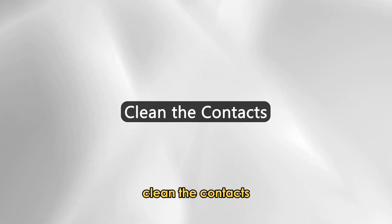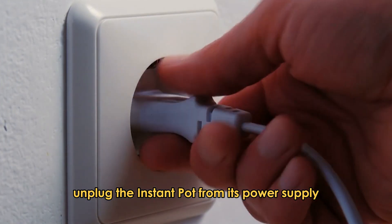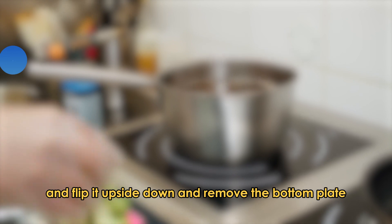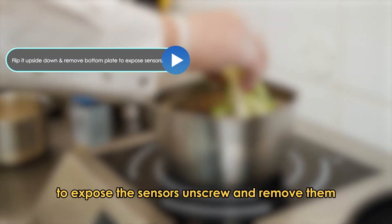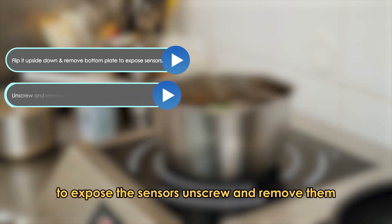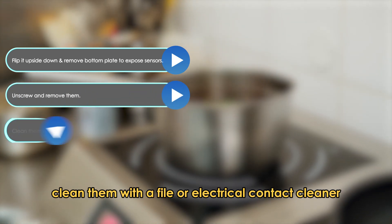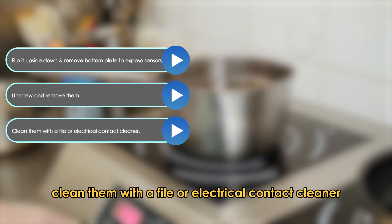Clean the contacts. Unplug the Instant Pot from its power supply, flip it upside down, and remove the bottom plate to expose the sensors. Unscrew and remove them. Clean them with a file or electrical contact cleaner.